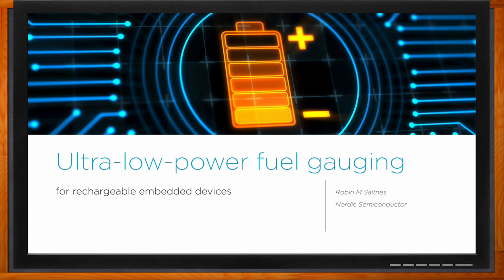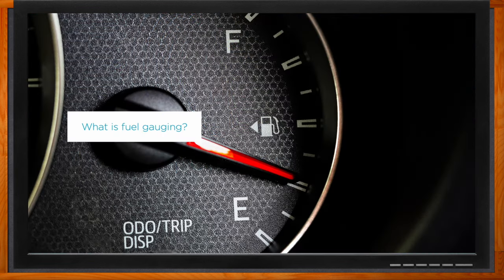We're talking about low power fuel gauging for rechargeable embedded devices today. Fuel gauging means estimating the state of charge of embedded devices — other terms for this are battery percentage or how much juice is left in the battery. At Nordic, being a low power semiconductor company, our customers see that their end-users expect to know how much charge is left in the battery of the devices they purchase.